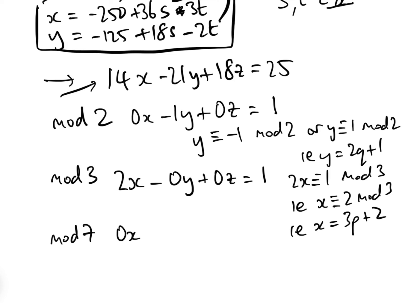Now if we look at mod 7, 14x is 0x, 21y is 0y, and 18z is 4z equals 4, i.e. we have 4z equals 4 mod 7, or z equals 1 mod 7, i.e. z equals 7R plus 1 for some R integer.